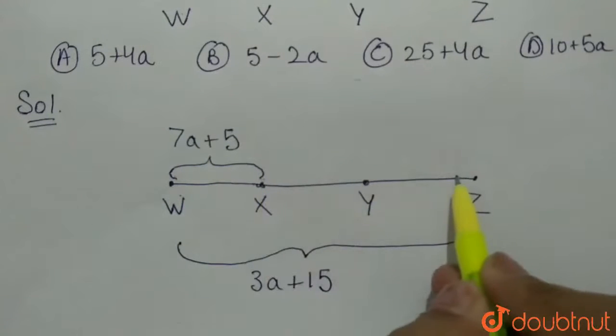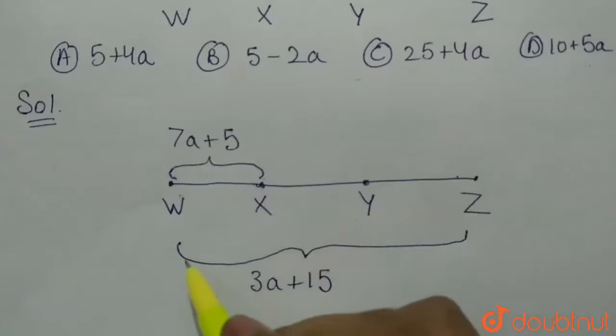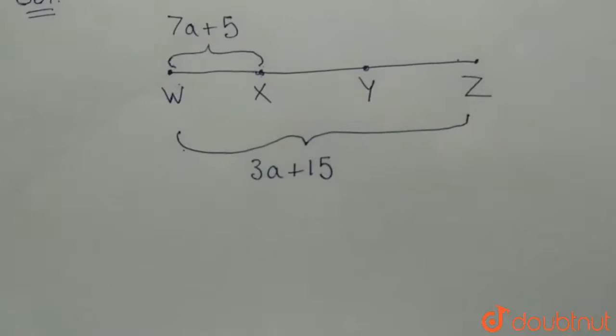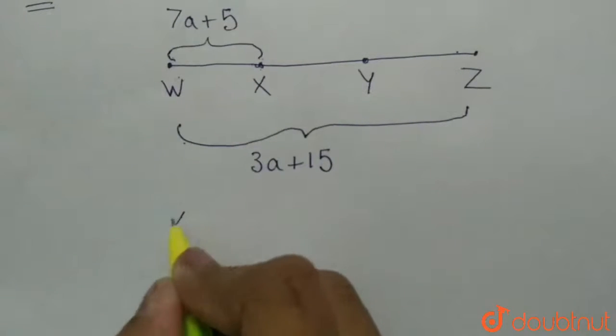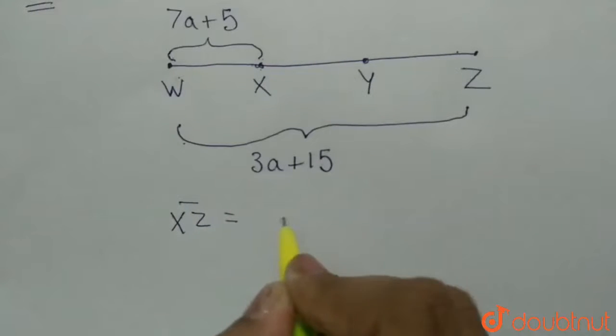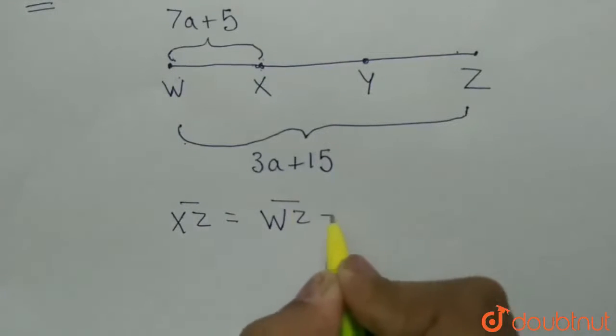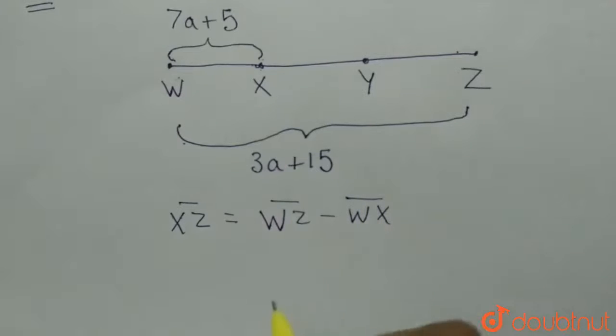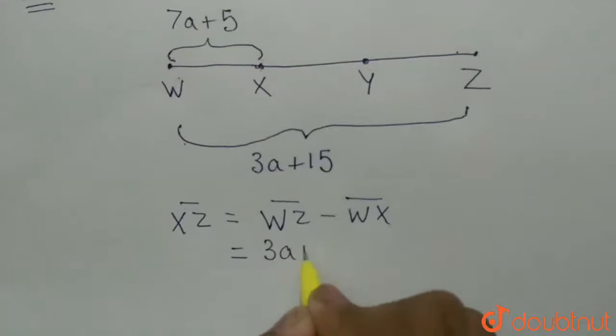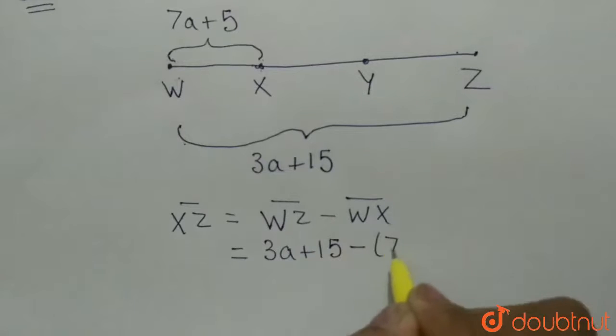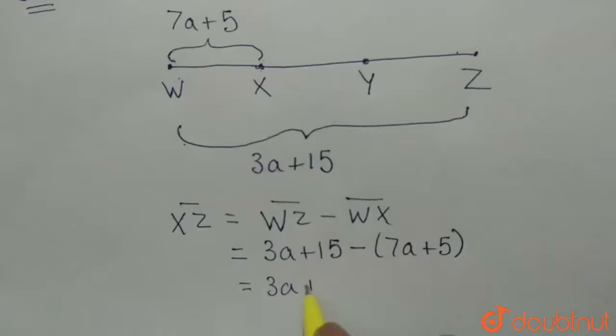To calculate XZ, we will subtract WX from this value of WZ. So, XZ is equal to WZ minus WX. WZ is 3a plus 15. And WX is 7a plus 5. On solving this, we get 3a plus 15 minus 7a minus 5, which is equal to 10 minus 4a.